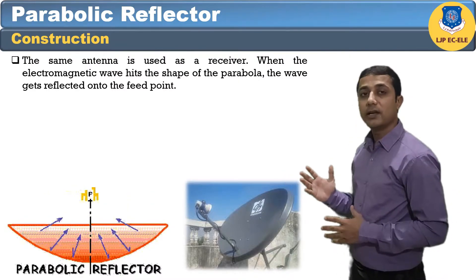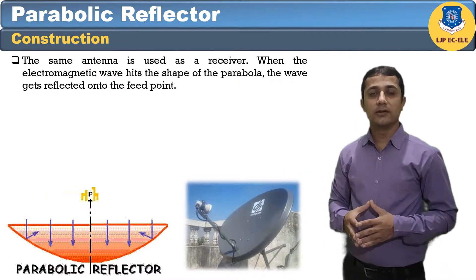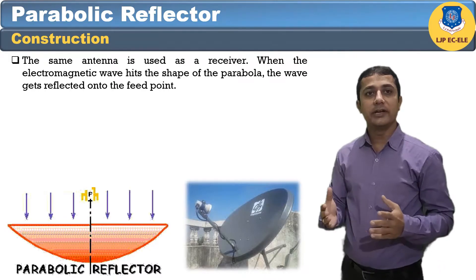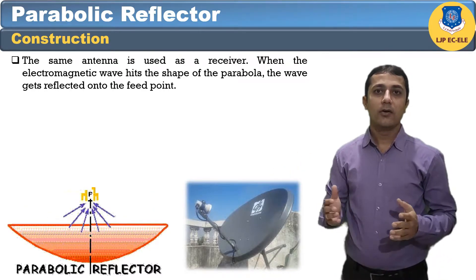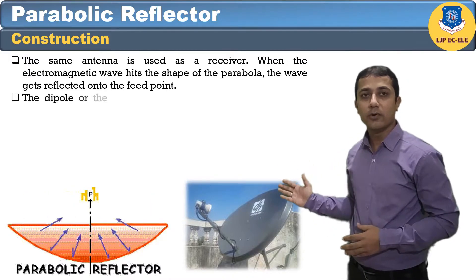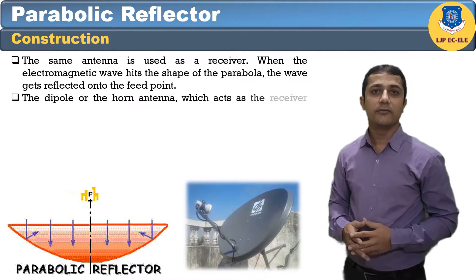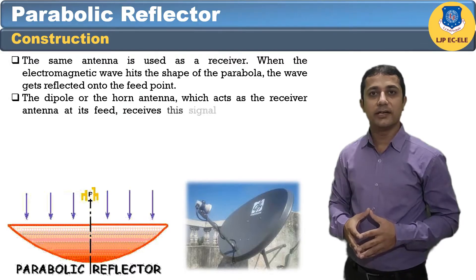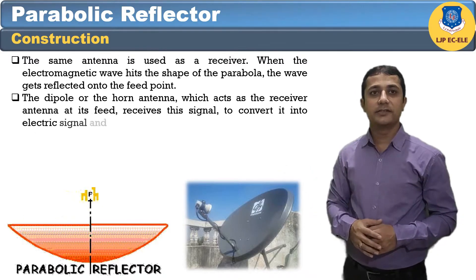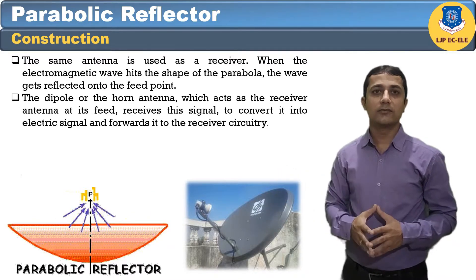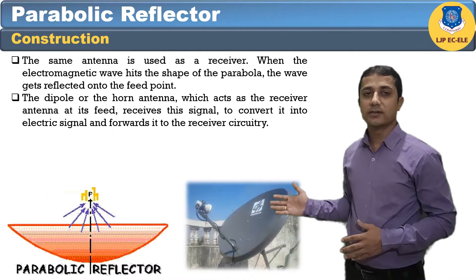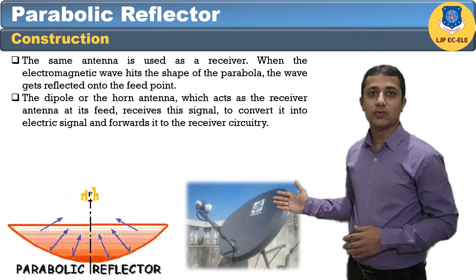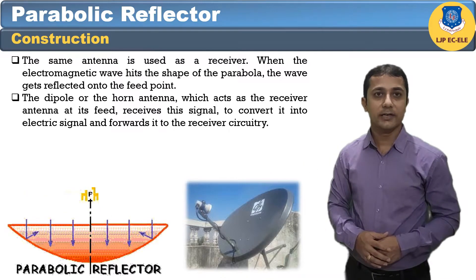The same antenna is used as a receiver. When the electromagnetic wave hits the shape of the parabola, the wave gets reflected onto the feed point. The dipole or the horn antenna acts as a receiver antenna at its feed, receives this signal to convert it into electrical signals and forwards it to the receiver circuitry. The image shows the parabolic reflector antenna.